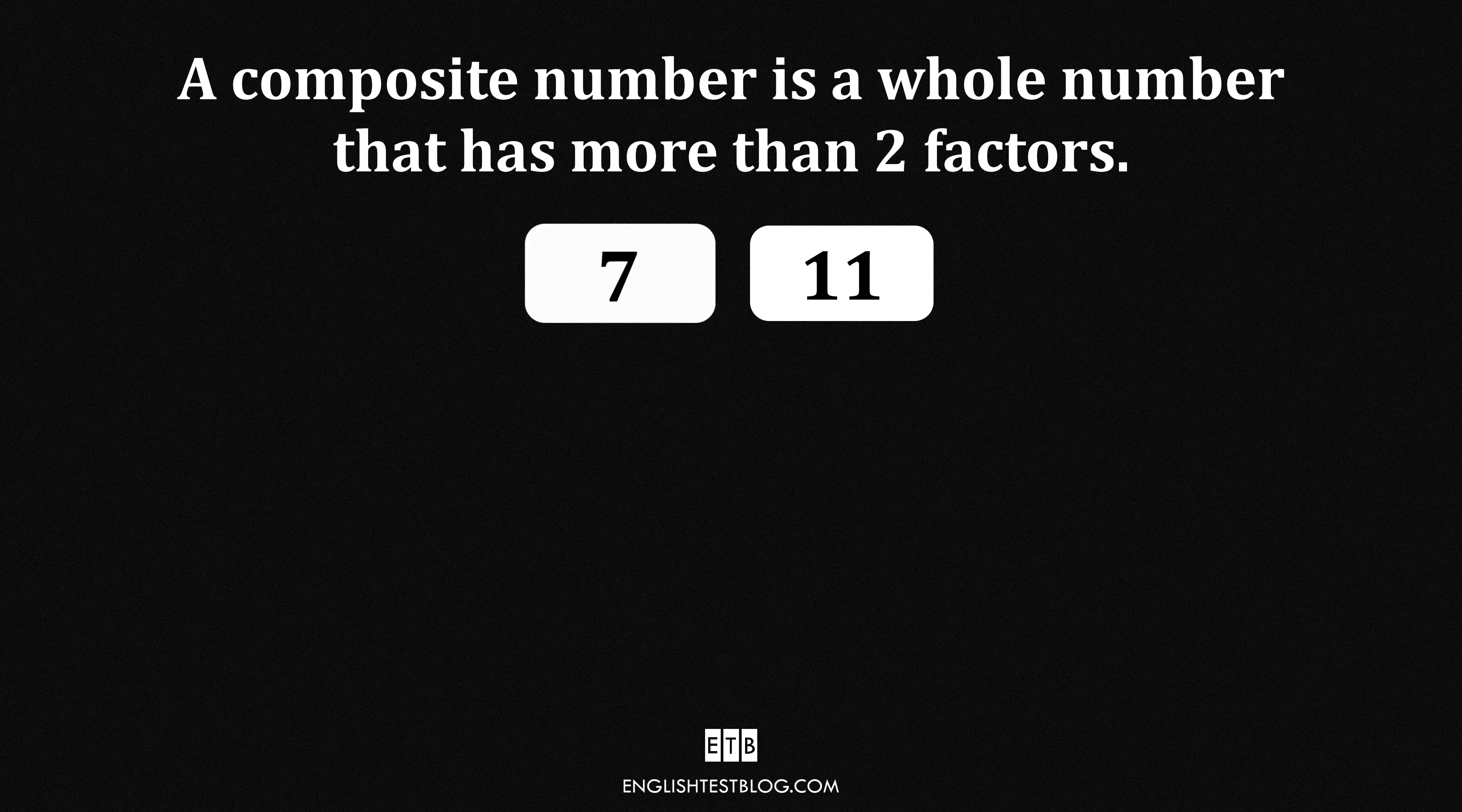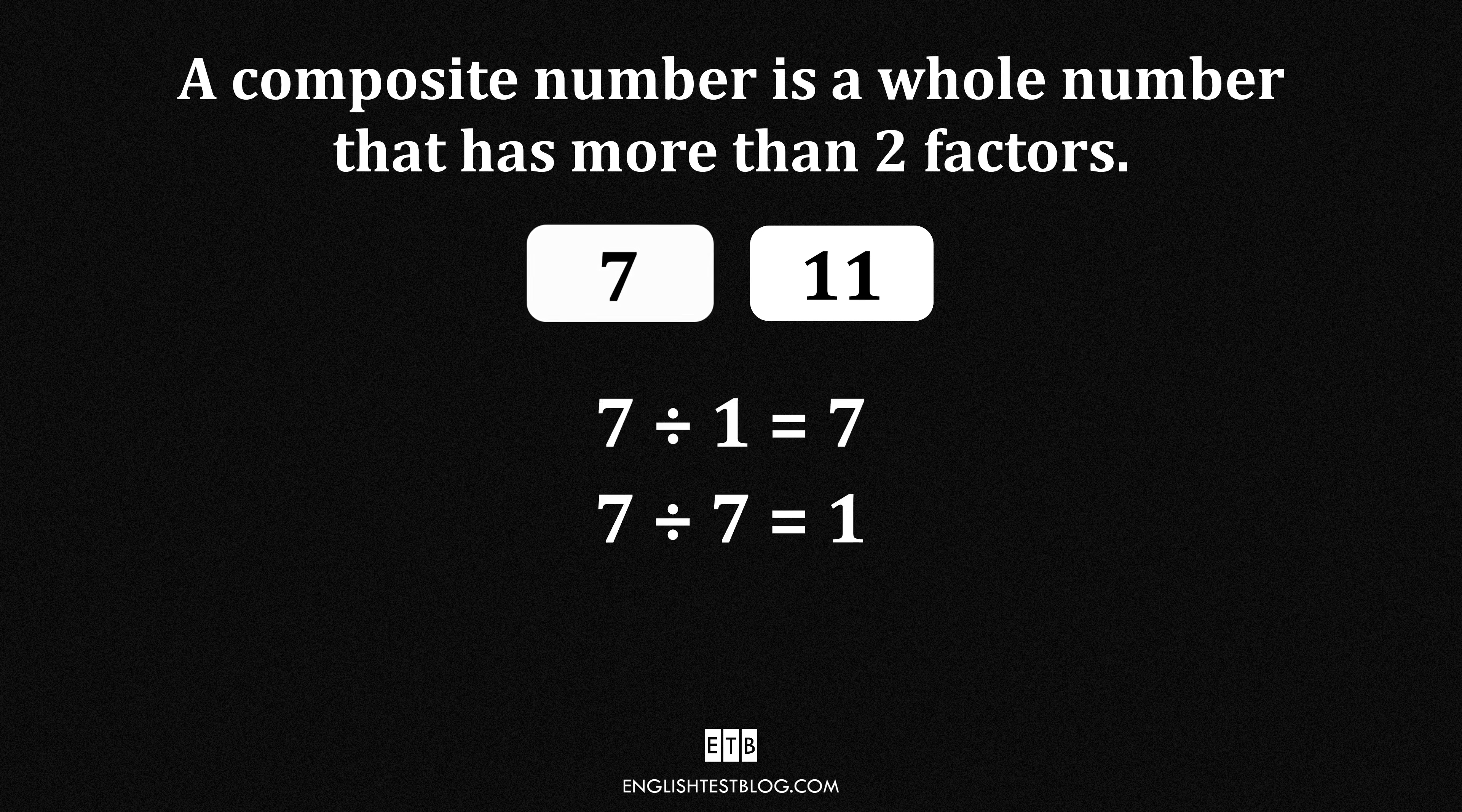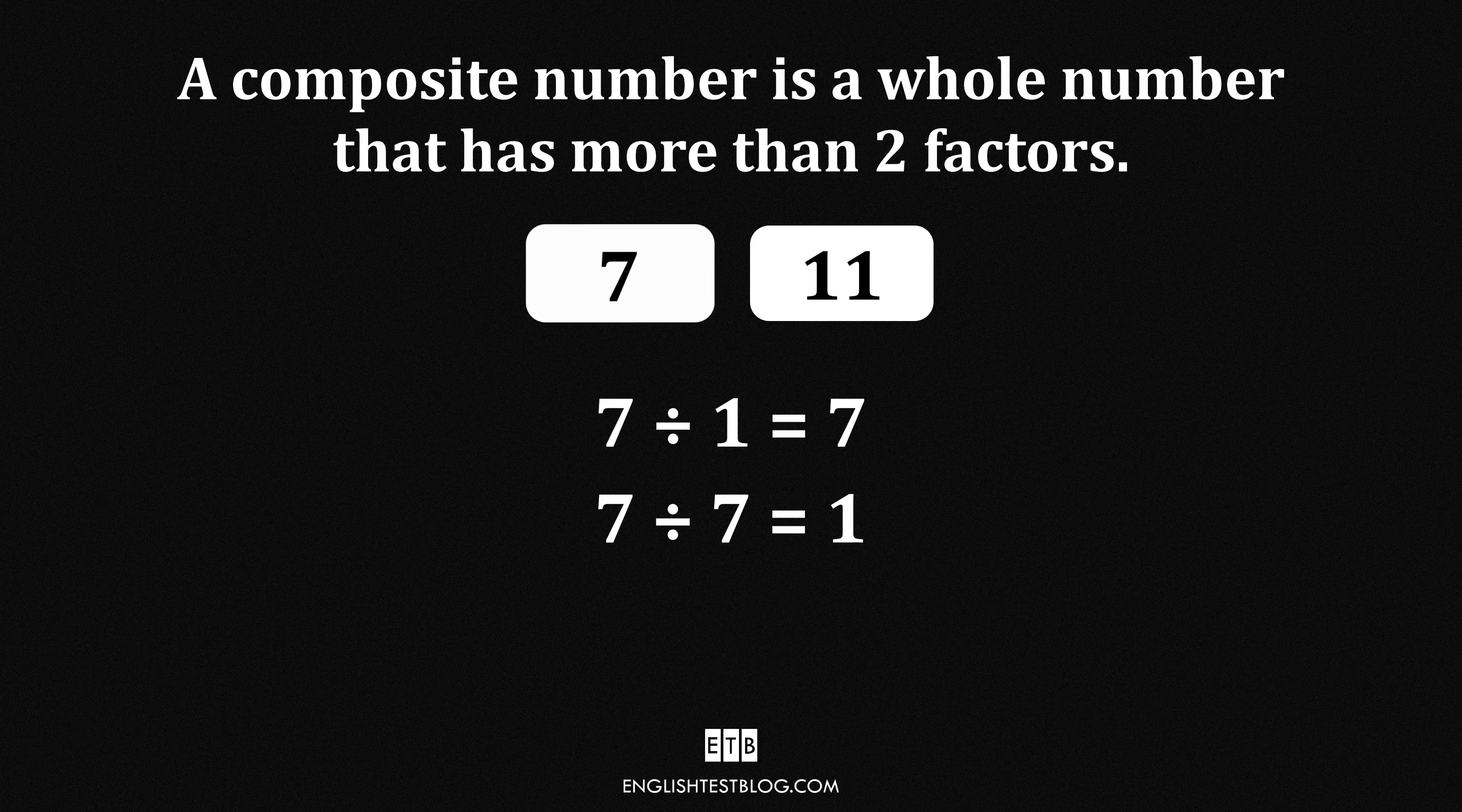7. The number 7 has only two factors, 1 and itself. A number with exactly two factors is called a prime number, so 7 is not composite.